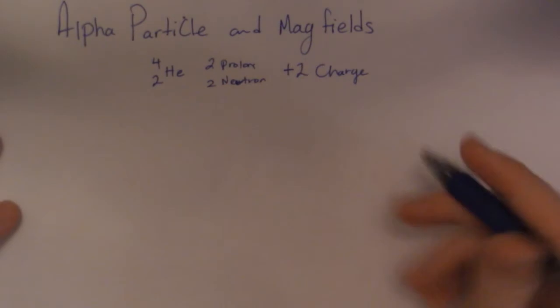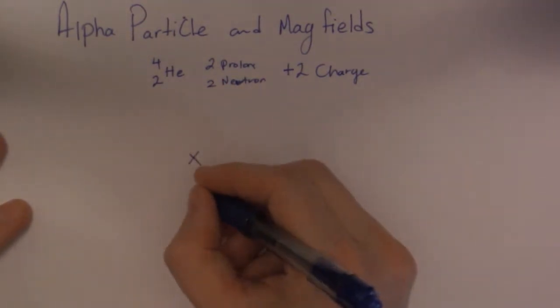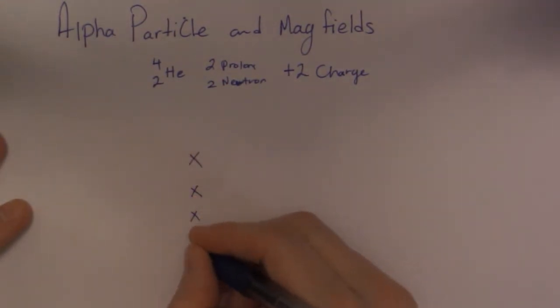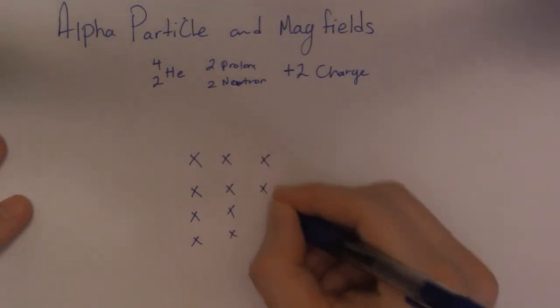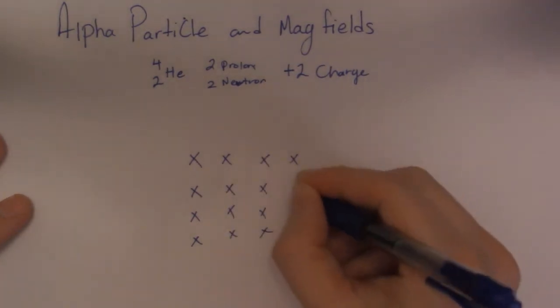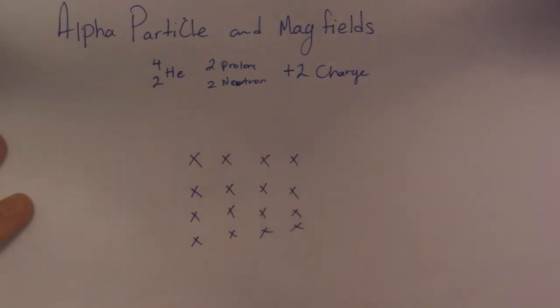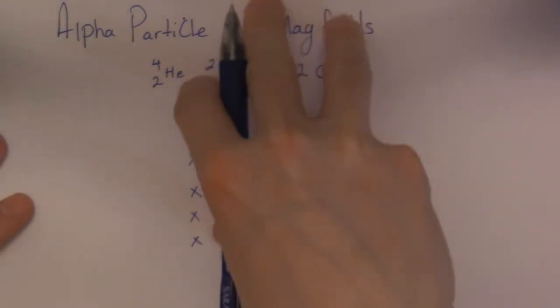So if I have a magnetic field, let's just make this fairly simple. If I have a magnetic field that's going into the page, represented by the X's, you can sort of picture it as a field that's going into the page like this.